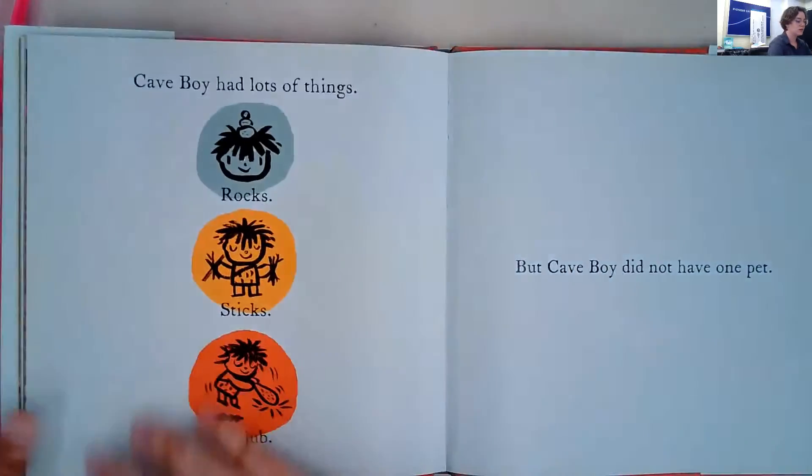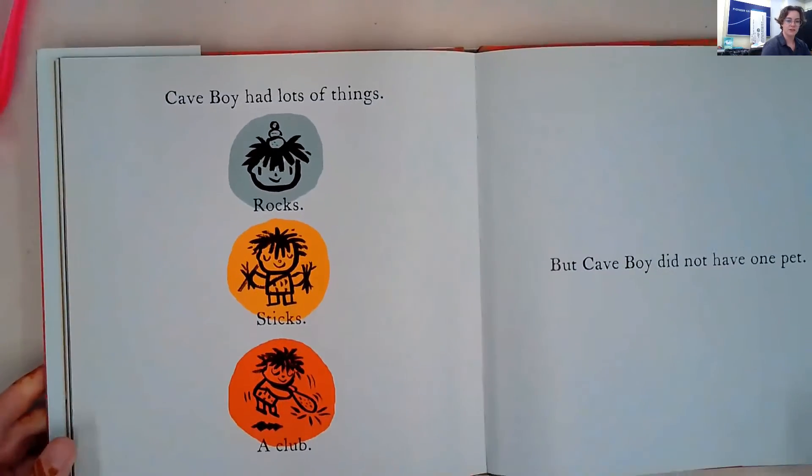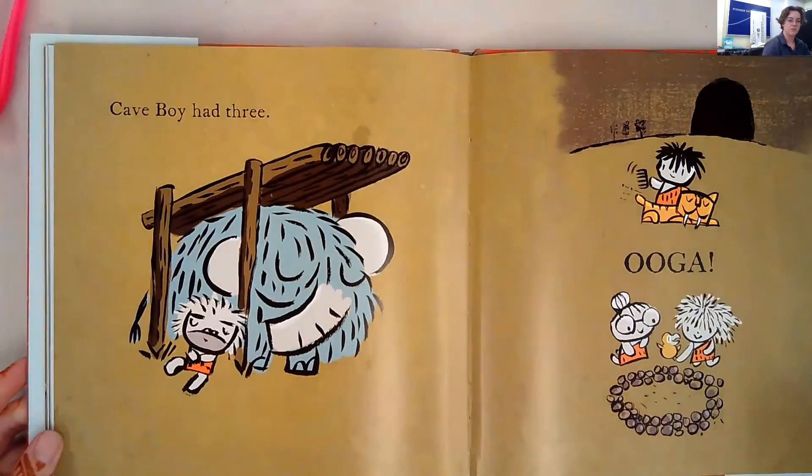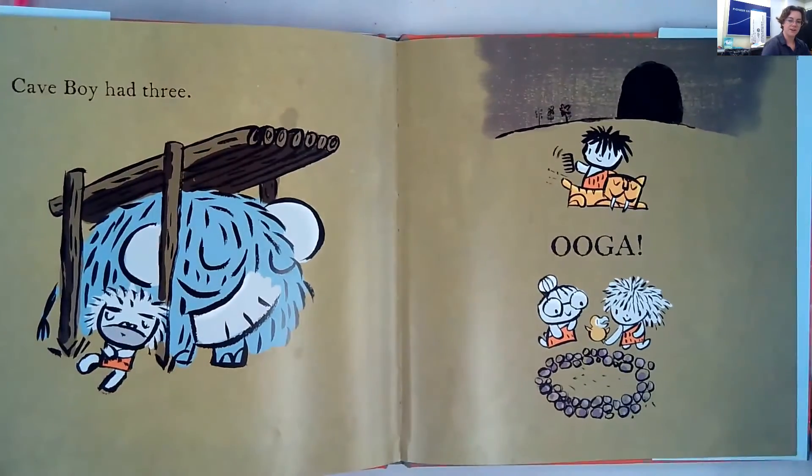Cave boy had lots of things: rocks, sticks, a club. But cave boy did not have one pet. Cave boy had three.